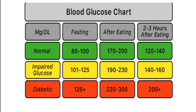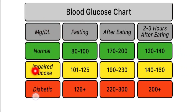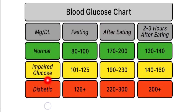First, let's look at the blood glucose chart. The unit of blood glucose or blood sugar is mg/dL. In the chart, green is normal, yellow is impaired glucose, and orange is diabetic. Impaired glucose means not normal and not diabetic — it is a pre-diabetic state.